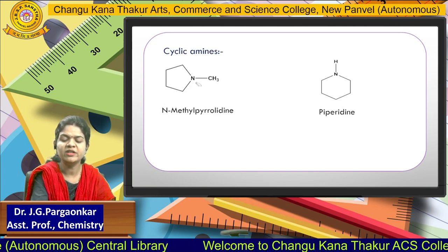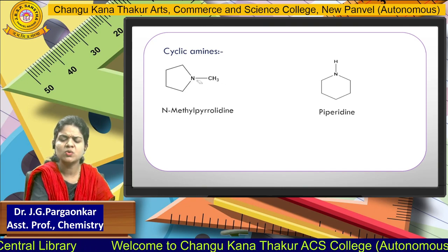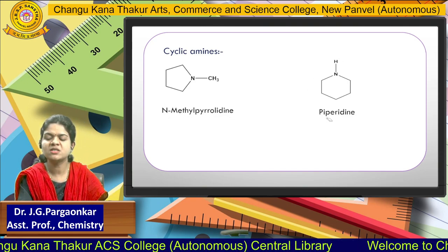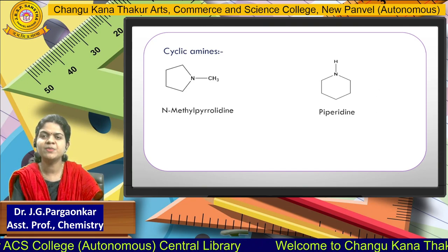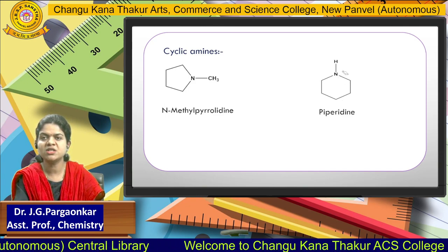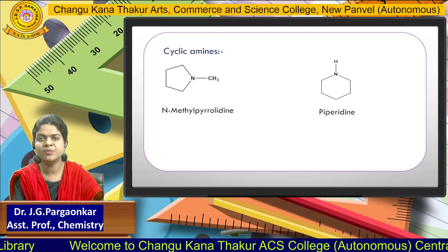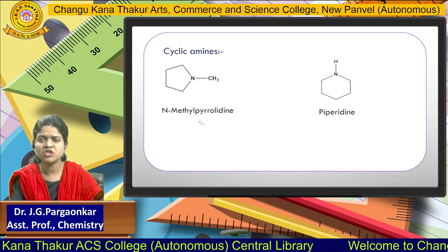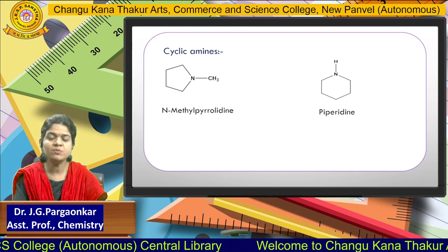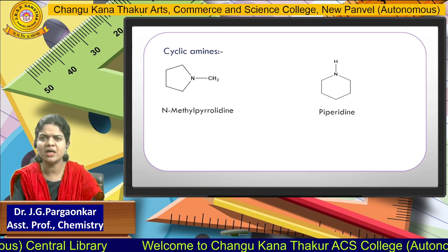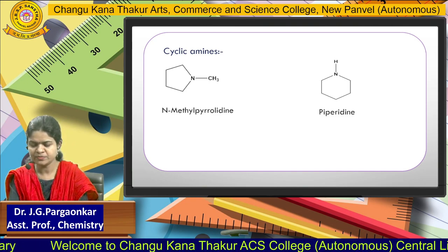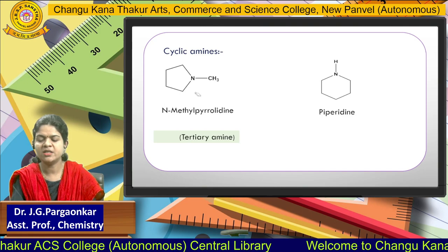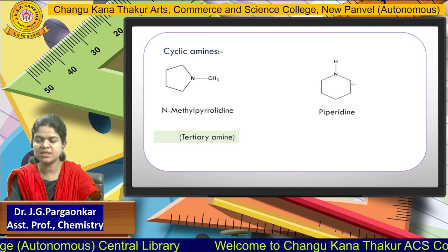This is a pyrrolidine ring. A methyl group is attached to the nitrogen, so we write N-methylpyrrolidine. The next heterocyclic compound is piperidine — a six-membered saturated ring containing nitrogen. For classification: the first structure is tertiary because nitrogen is attached to three alkyl groups; the second is secondary because nitrogen is attached to two alkyl groups.